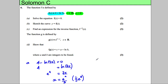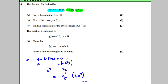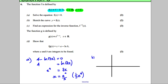Now we're asked to sketch the curve y is equal to f of x. So let's sketch that in two stages. The first thing I'm going to do is draw the normal log graph. The normal log graph looks like this — it crosses at (1, 0), and this is y is equal to the natural logarithm of x.